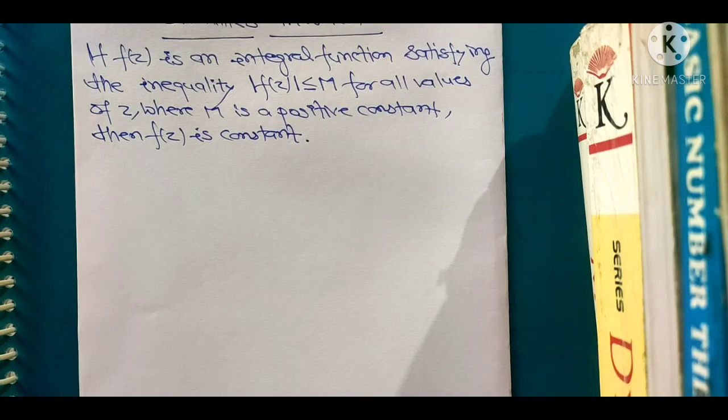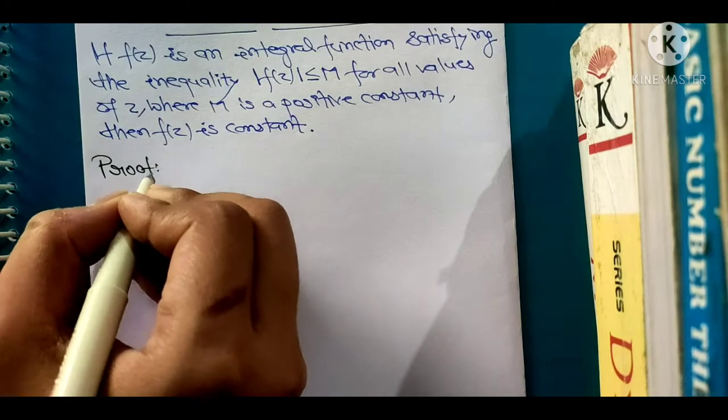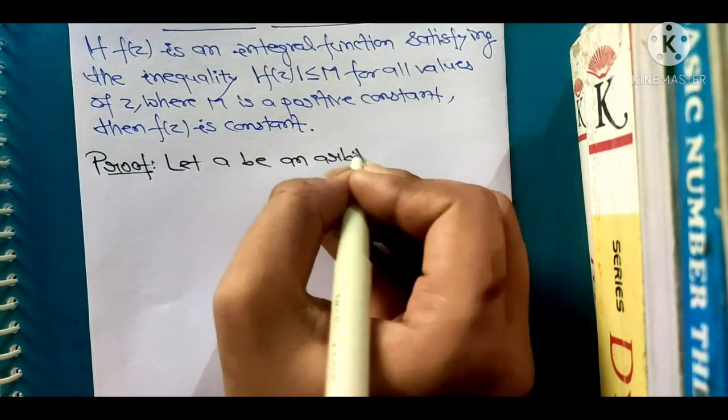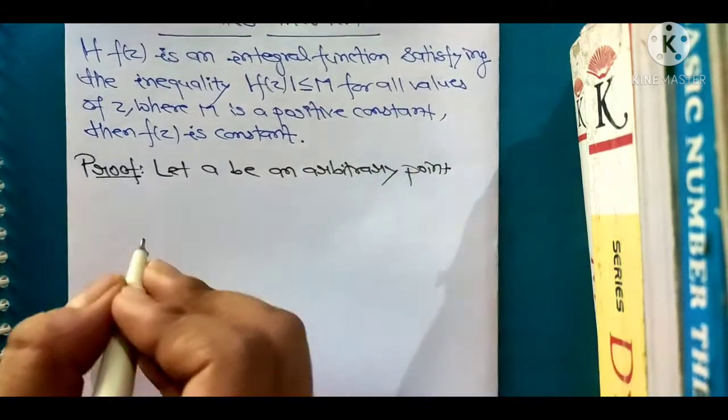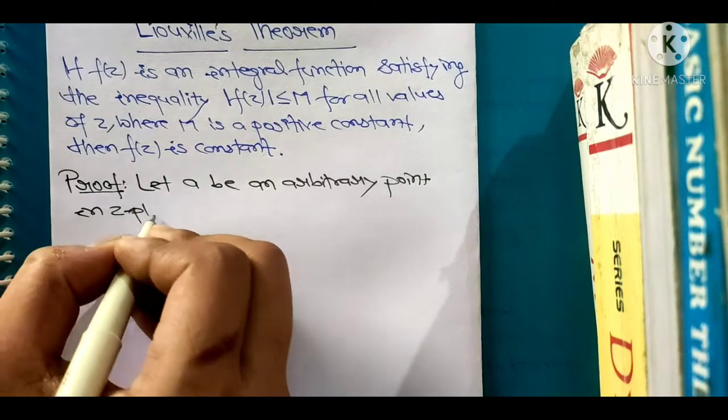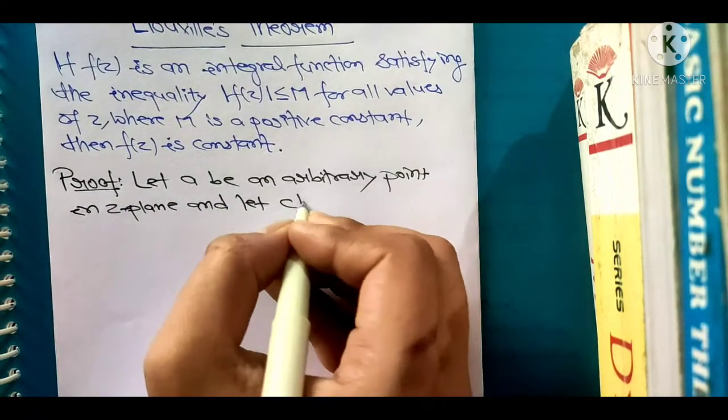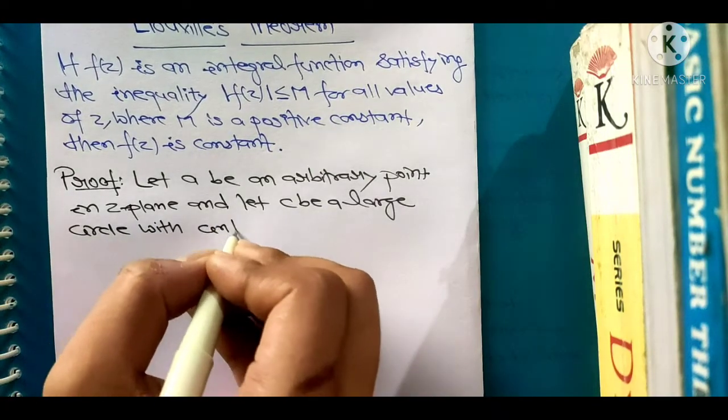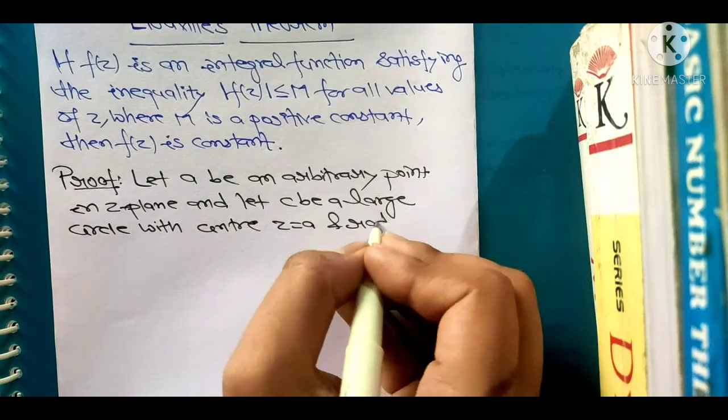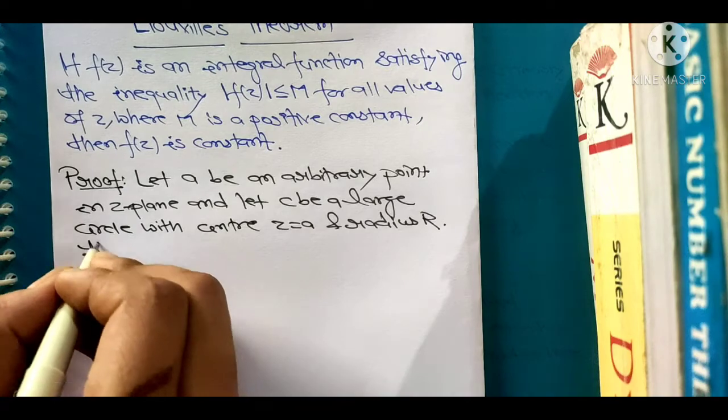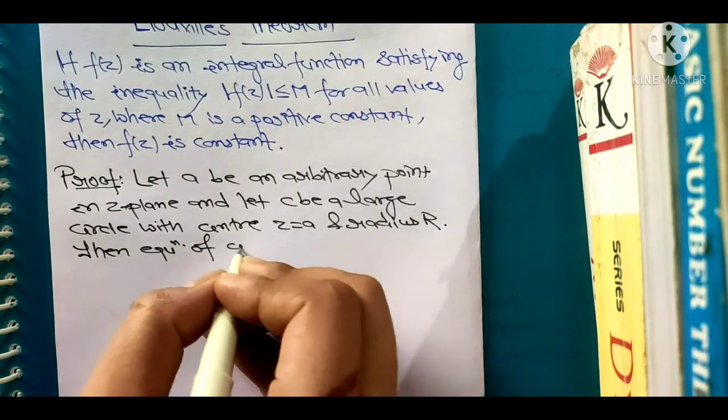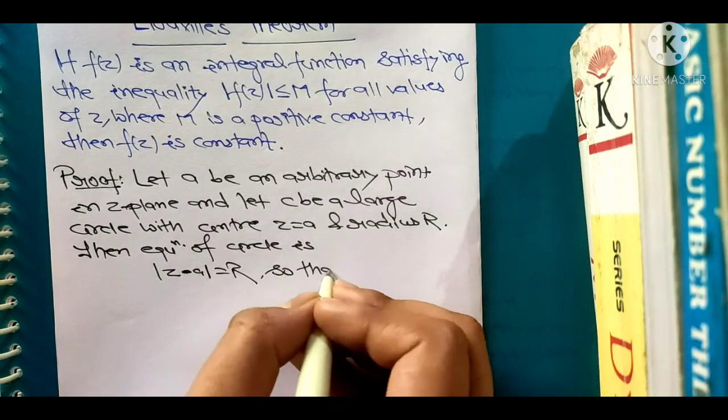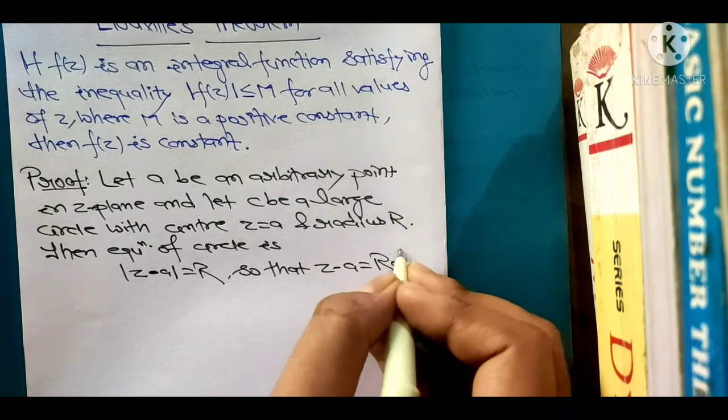Let's start the proof. If you have not subscribed to my channel, please subscribe and hit the like button. Proof: Let a be an arbitrary point in the z-plane and let capital C be a large circle with center z equals a and radius capital R. Then equation of circle is modulus of z minus a equals capital R, so that z minus a equals R e to the power i theta.